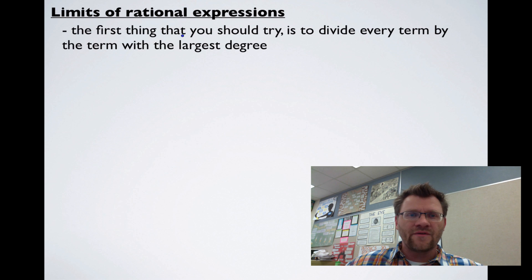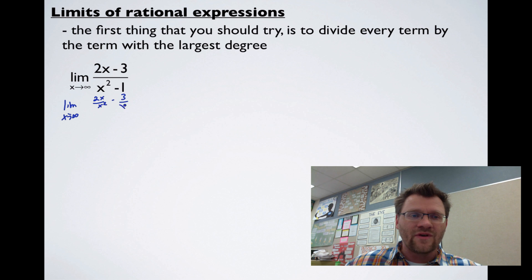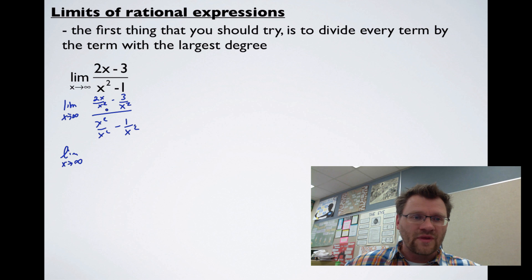For limits of rational expressions, the first thing you should try when you have a rational expression and you're finding a limit as x approaches infinity is to divide each term by the term with the largest degree. In our first example, the biggest degree is x squared, so we divide each term by x squared. We get 2x over x squared, negative 3 over x squared, x squared over x squared, and 1 over x squared. Simplified, we get the limit as x approaches infinity of (2/x − 3/x²) all over (1 − 1/x²).